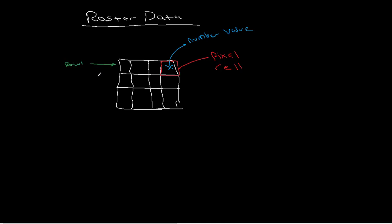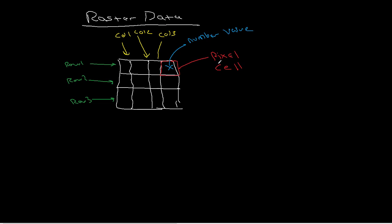Each raster is organized in a series of rows — so horizontal arrangements — row one, row two, row three — and columns, which are the vertical arrangement. So this would be column one, column two, column three, and so on. Raster data is a regular arrangement of grid cells containing values organized in rows and columns.